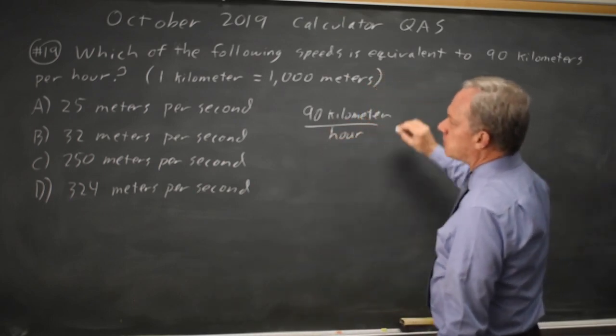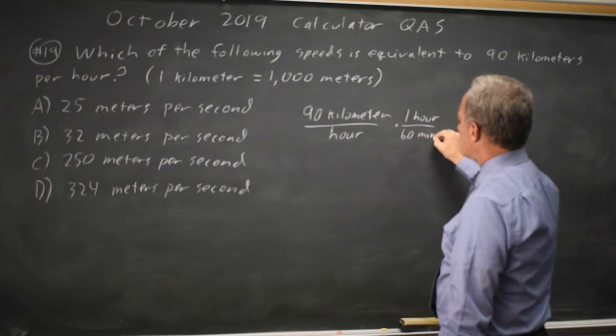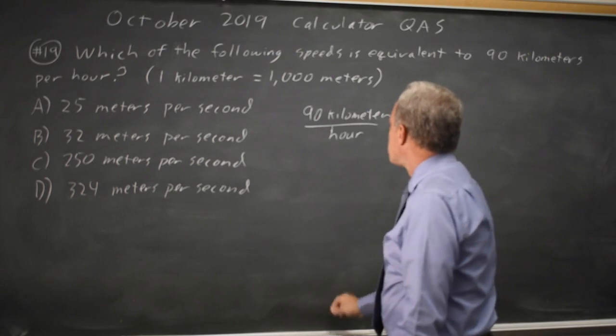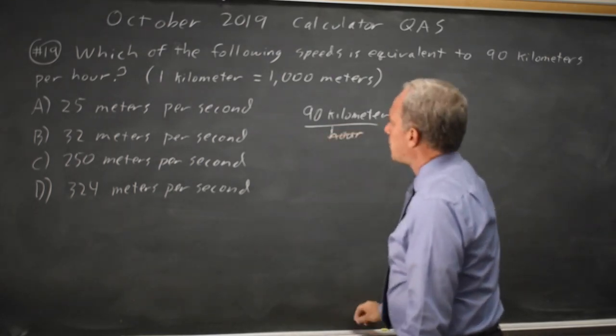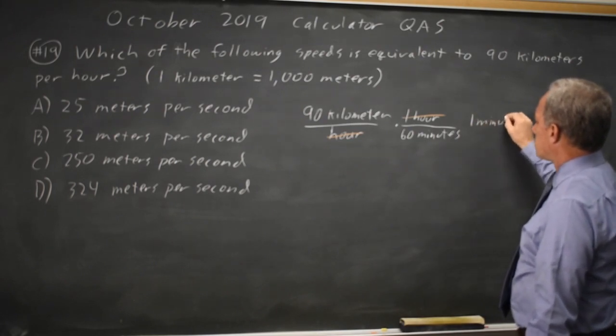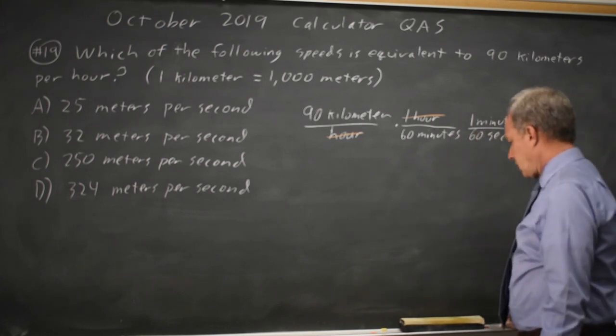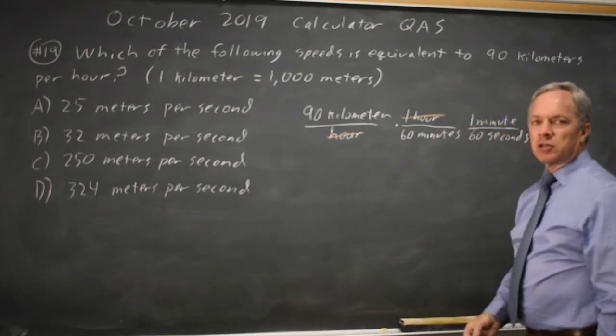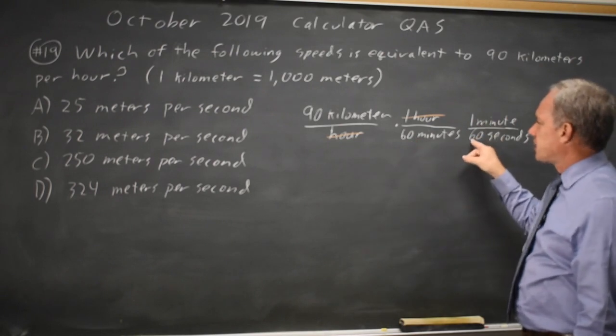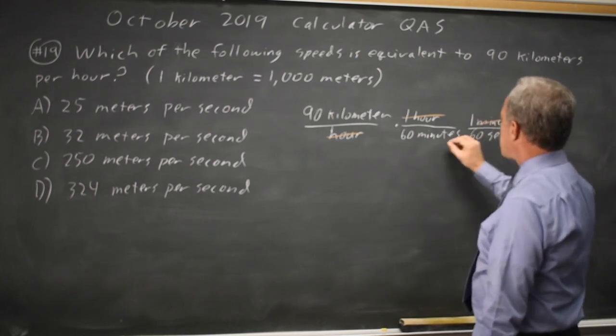I'm going to convert it to minutes, because one hour is 60 minutes. And I put one hour in the numerator, because that will cancel my hours in the denominator here. And now I'll convert to seconds, because one minute is the same as 60 seconds. And I like writing my conversion factors as fractions that are equal to one, because if one minute equals 60 seconds, I can multiply by that and I'm not changing anything, because I'm multiplying by one. So the minutes cancel.